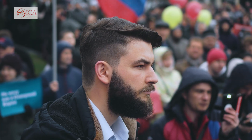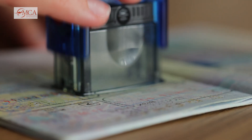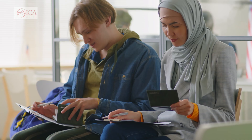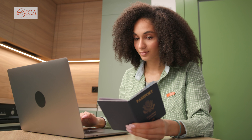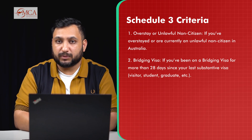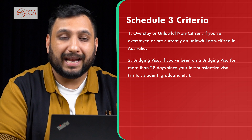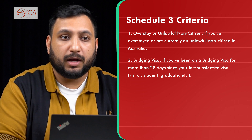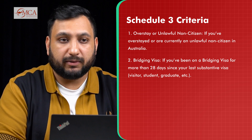If you have overstayed or are currently an unlawful non-citizen in Australia, or you're on a bridging visa and have been on a bridging visa for more than 28 days since you last held a substantive visa — which could be a visitor visa, student visa, graduate visa, or any kind of those visas — you are subject to this Schedule 3 criteria.